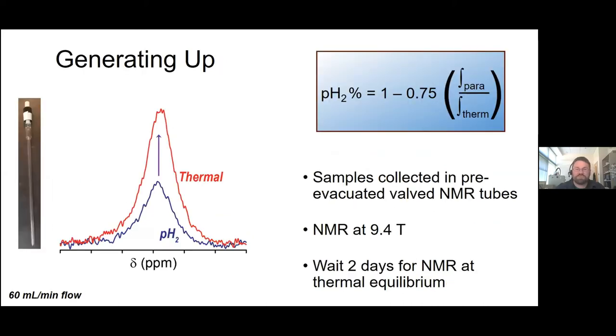After our hour's up, we collected our parahydrogen samples into a valved NMR tube that we'd already evacuated down to 0.1 torr. We took it upstairs in chemistry and did NMR on it at a 400 megahertz system. Then we waited two days and did NMR on the same tube again. We got our initial low tiny signal with the parahydrogen mostly in it. When it's relaxed back to its normal thermal equilibrium ratio, you get a little bit more signal. You can take the ratio of the signals to figure out how much parahydrogen you had originally made in the first place.